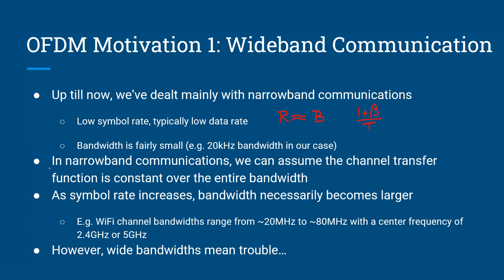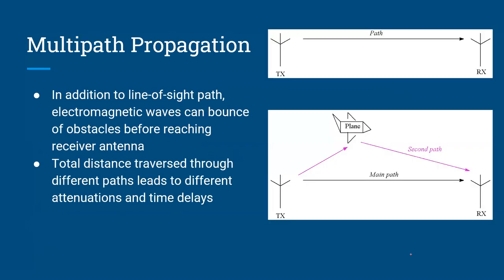Until now we've been considering narrowband communications, where the bandwidth is small enough that we can assume the channel transfer function is effectively constant over the entire bandwidth. So our modulation occupies just a small sliver of the channel frequency response, which appears flat — meaning effectively no distortion. But as you keep increasing the symbol rate, the bandwidth increases, and wide bandwidths mean trouble.